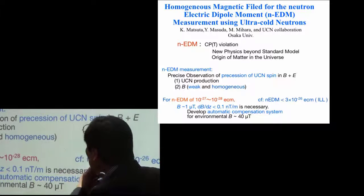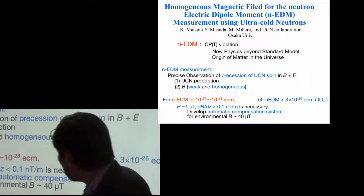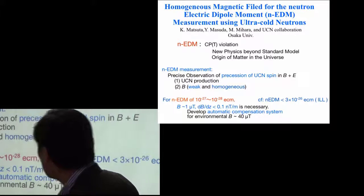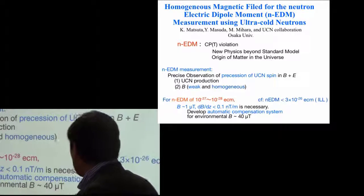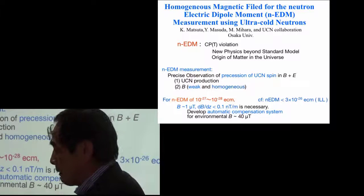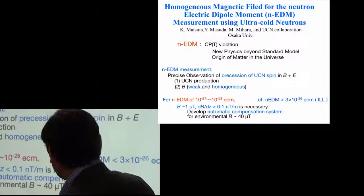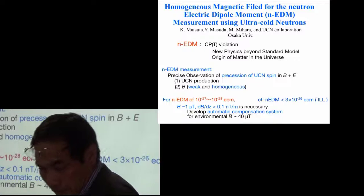For this kind of measurement, a very precise magnetic field of about 1 microtesla, very small, and very homogeneous magnetic field with a field gradient less than 0.1 nanotesla per meter is necessary.